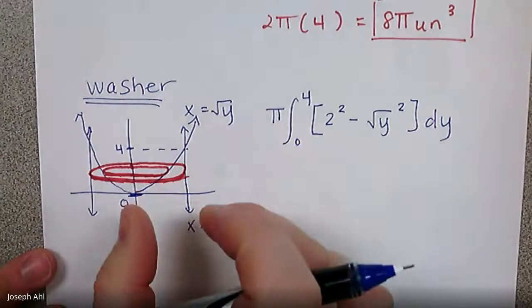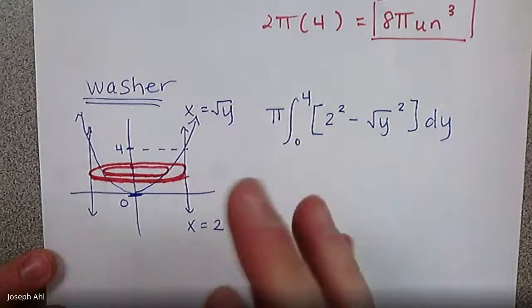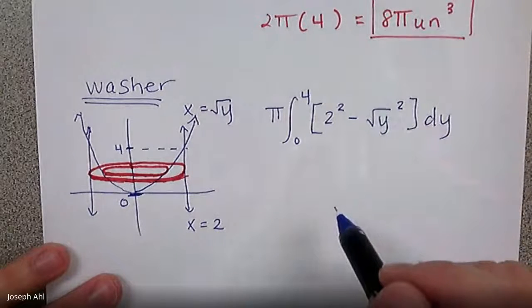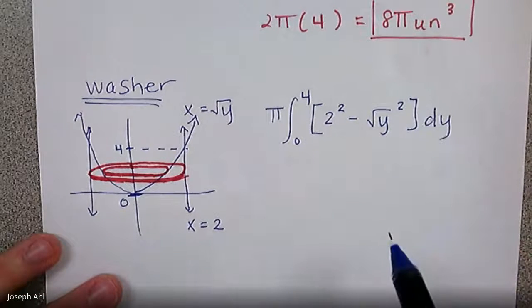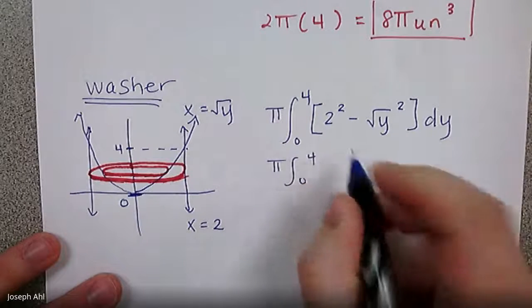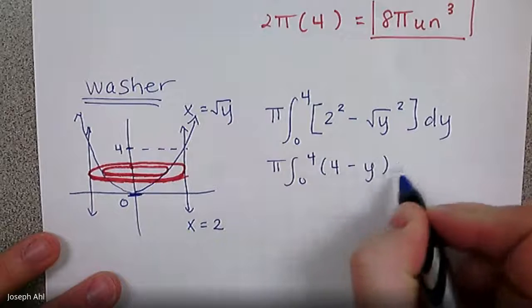And as soon as you have that set up, again, the tougher thing about this whole situation, and this whole process is the setup, in my opinion, let's confirm that if I find the anti-derivative plug in the bounds that we do get 8π in the end. So it's going to be π from 0 to 4 of this is the function 4 minus y.